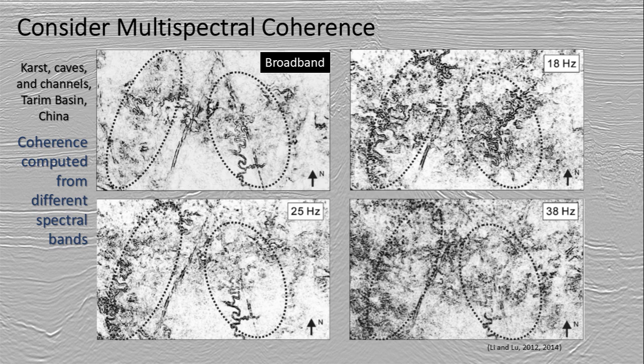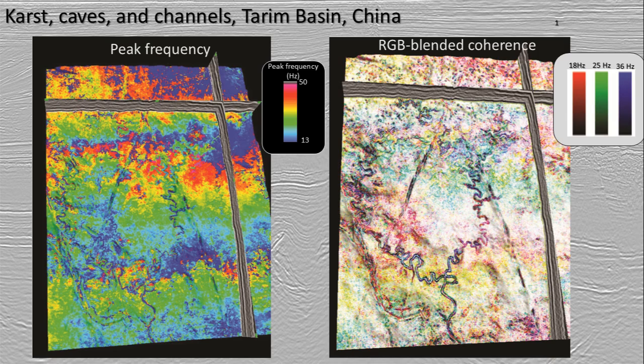Multispectral coherence calculates coherence for different spectral ranges. As you can see here in this case, when we've got the broadband in the upper left compared to pulling out coherence at 18, 25, and 36 hertz, you can image different parts of that karstic system — the caves and the channels in the trim basin. Calculating your peak frequency is really key, and on the right-hand side we're combining those three different frequencies using a red-green-blue blended coherence image, which really reveals some vivid details.